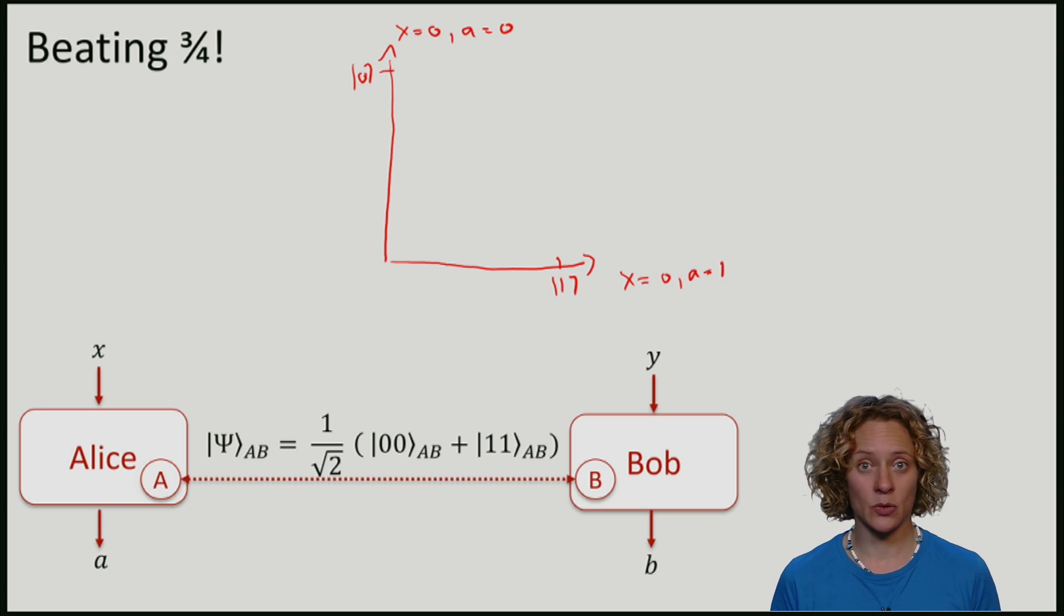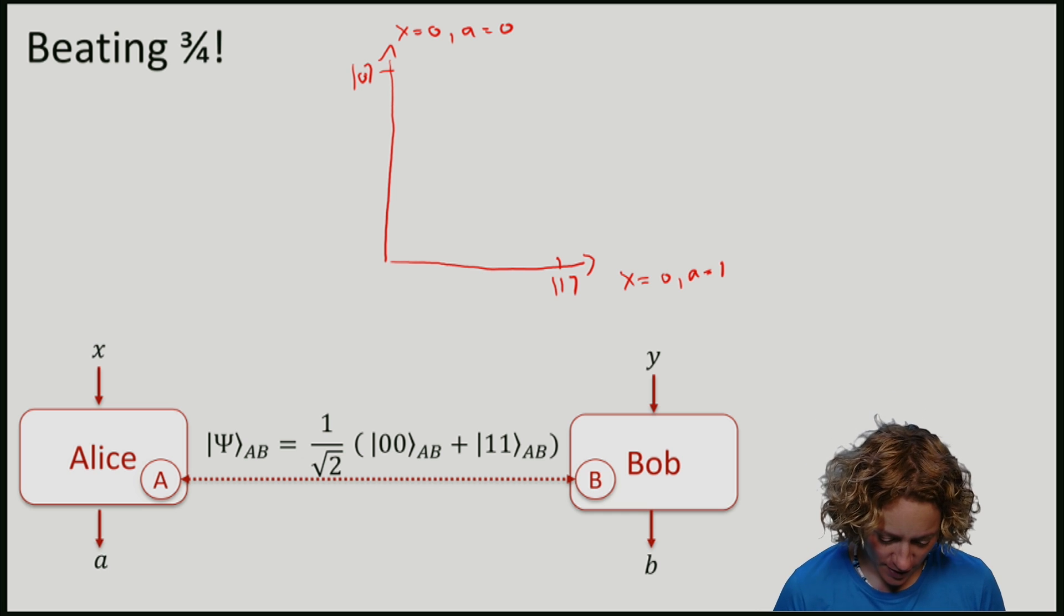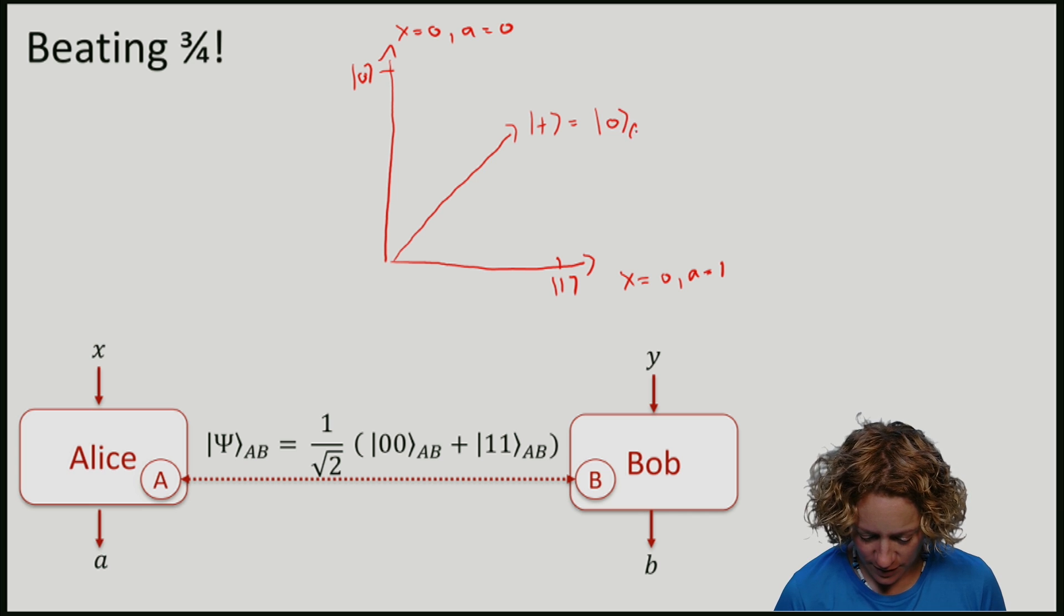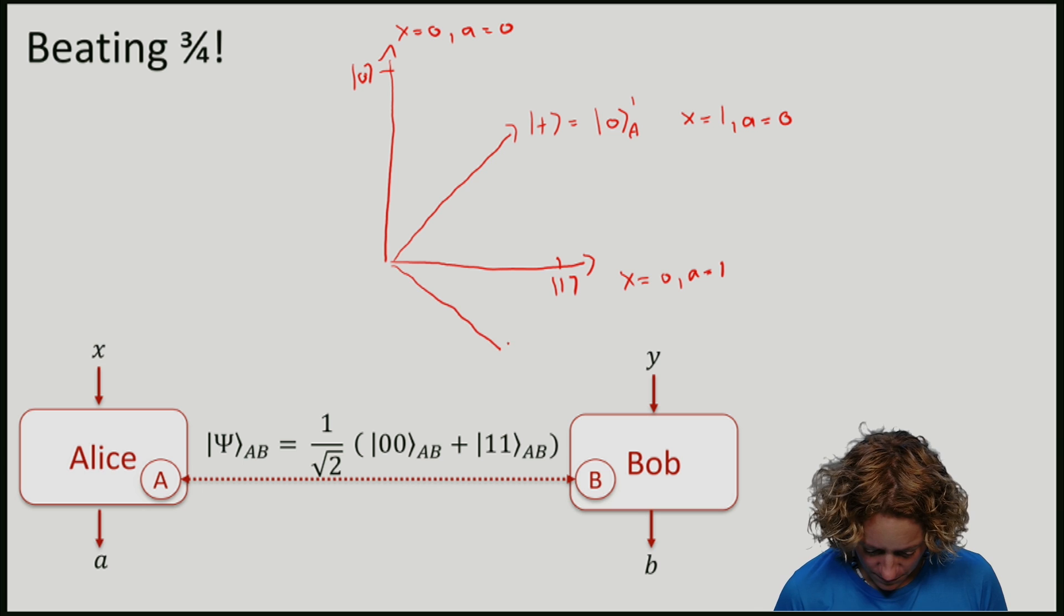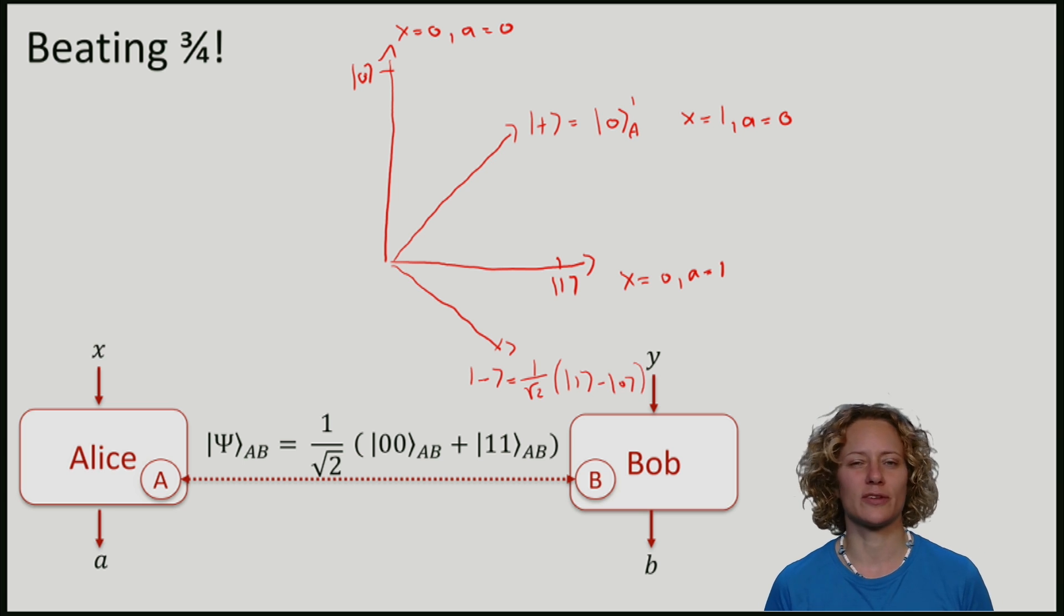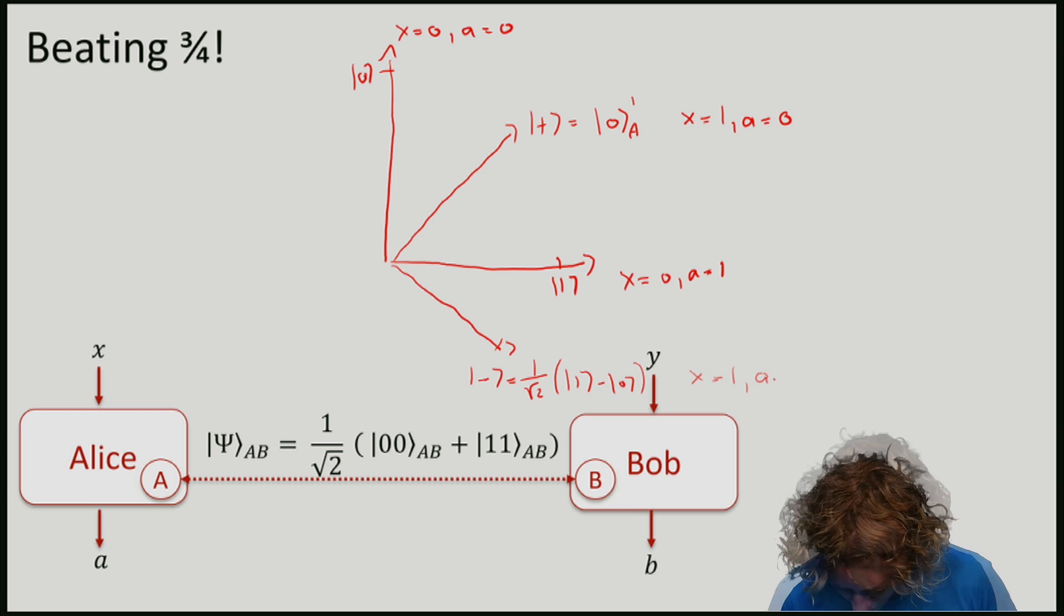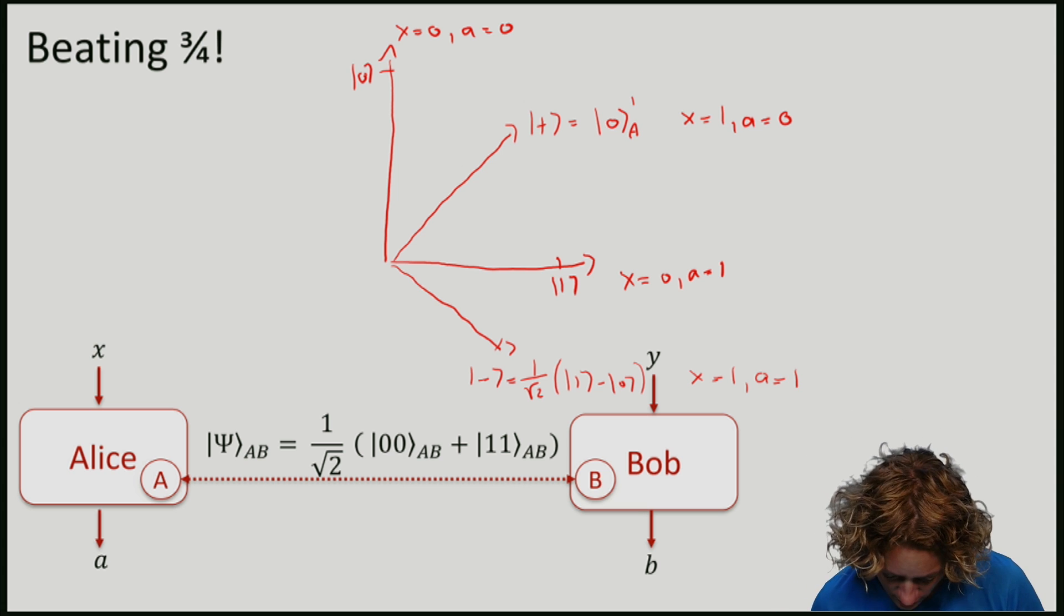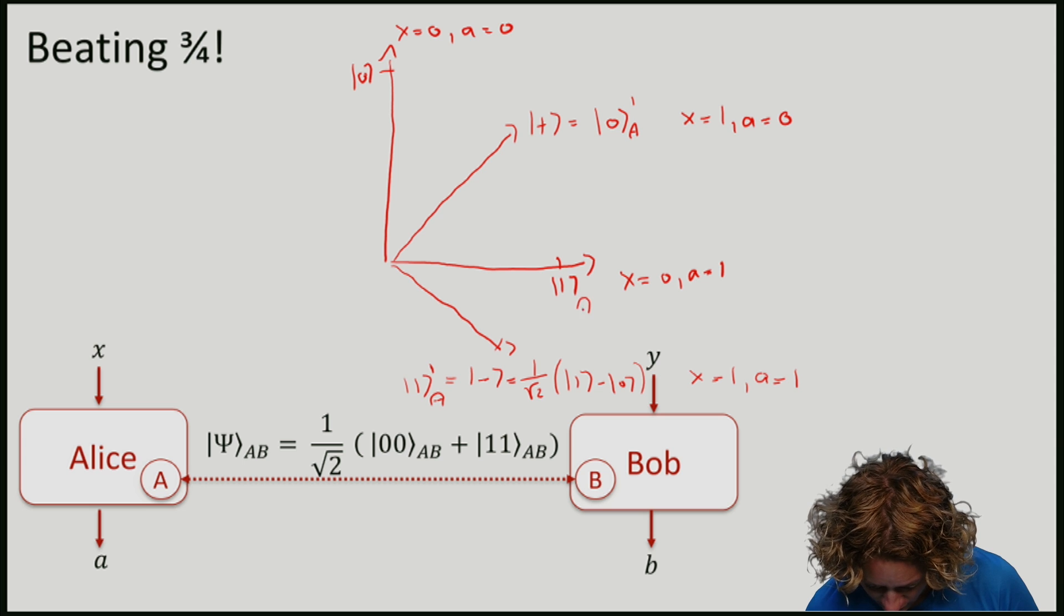If Alice gets asked question x equals one, she will measure in the Hadamard basis. So this here is plus, corresponding to answer zero if Alice is asked question one. It will be convenient for me to draw minus down here. So I'll write it as one minus zero. So it differs from our normal minus just with the extra minus in front. Let me give this vector a name. I'll call it one for outcome one. I'll put the one to remind ourselves that this was question one. So all of this is on Alice.